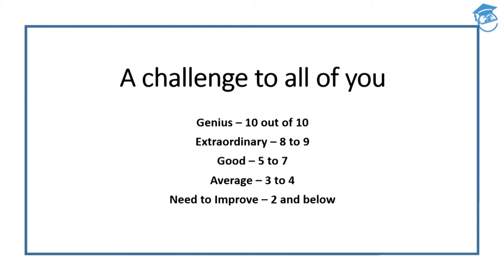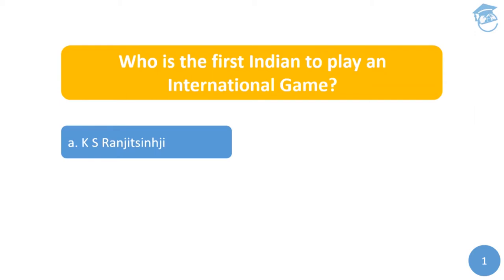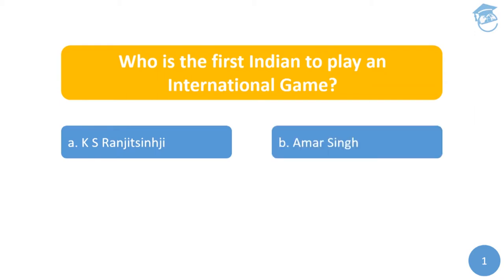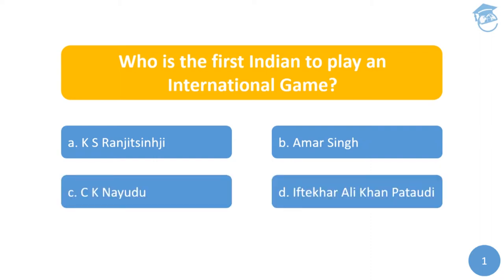Let's move straight away to the first question for the day. Who is the first Indian to play an international game? Your options are: A) Kumar Shri Ranjitsinhji, B) Amar Singh, C) CK Nayudu, or D) Iftikhar Ali Khan Pataudi. You have five seconds — your time starts now.